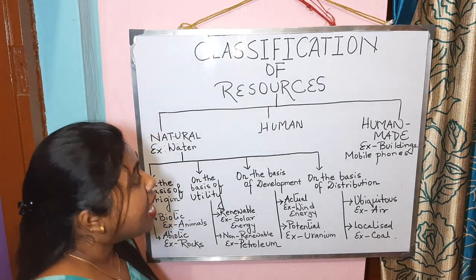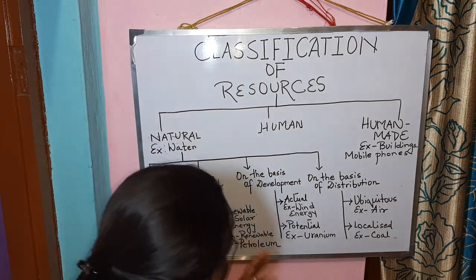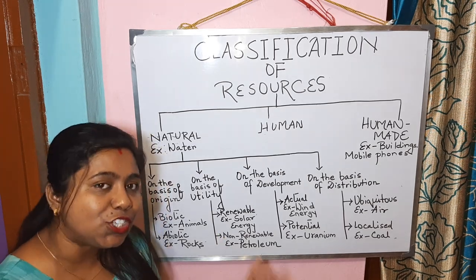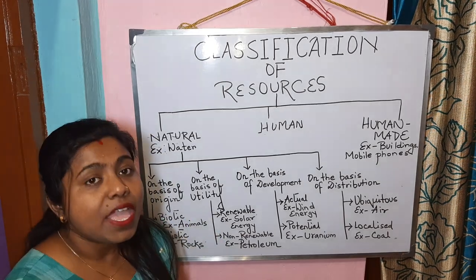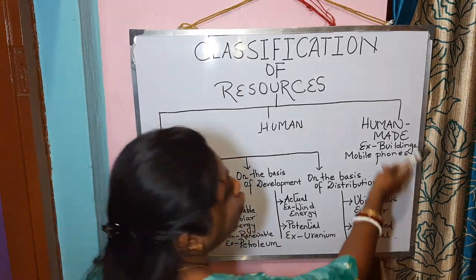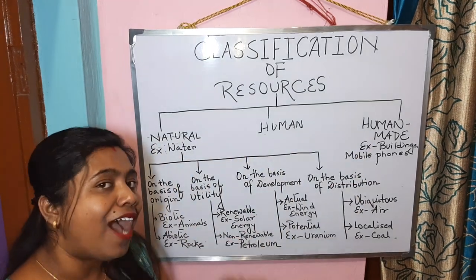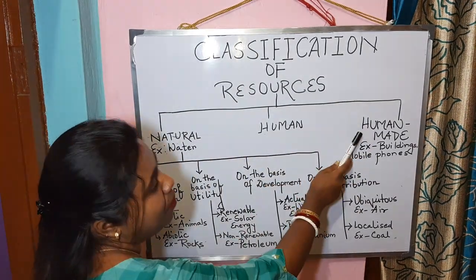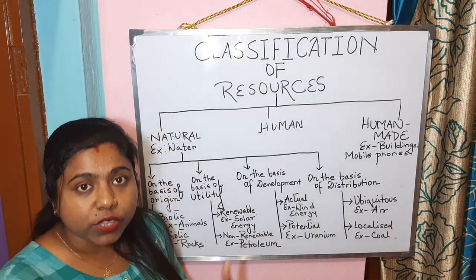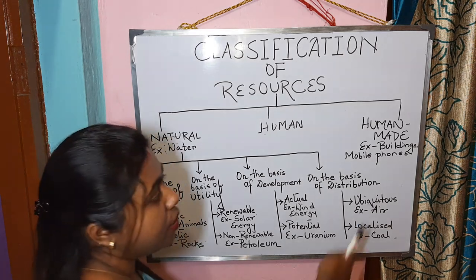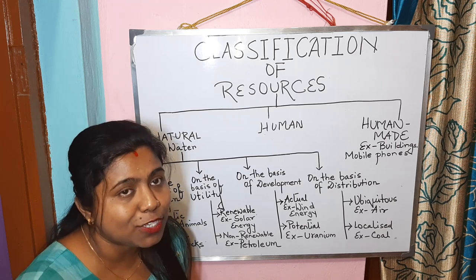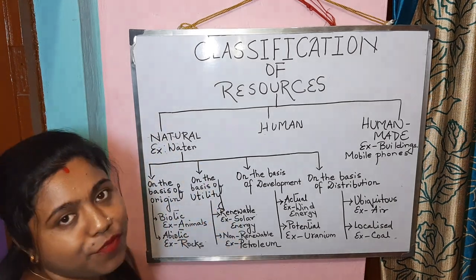Only human beings are considered the most important resource, as they can utilize natural substances and turn them into economically important resources. Human-made resources are the product of human beings — the resources created by them for their own benefits and needs. For example, buildings and mobile phones that we use are created by human beings only.